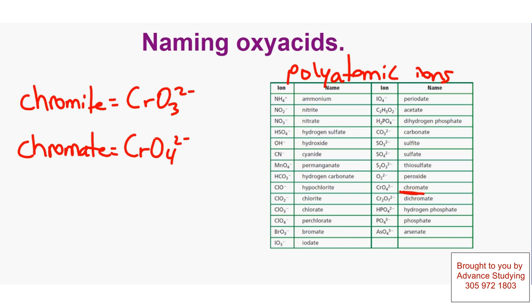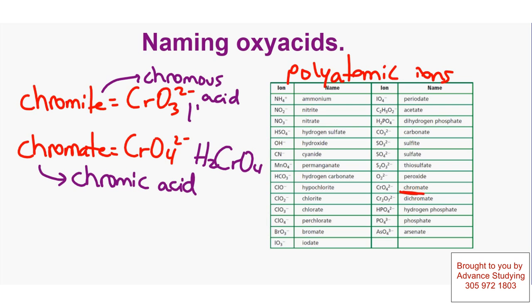So naming these acids, let's go with chromate and we would name this chromic acid. And if I had to name the chromite acid, this would be chromous acid. The same rule applies. The acid would be H2CrO4, and the acid of this one would be H2CrO3.